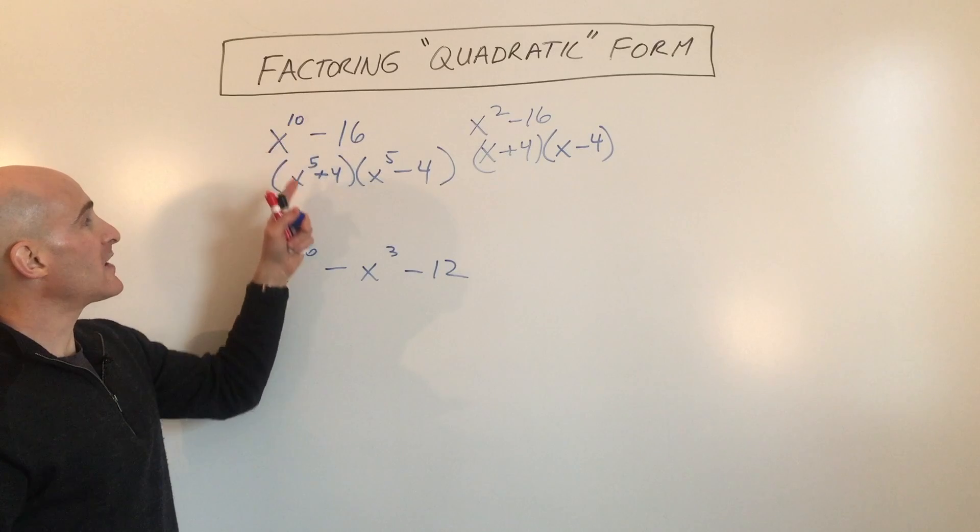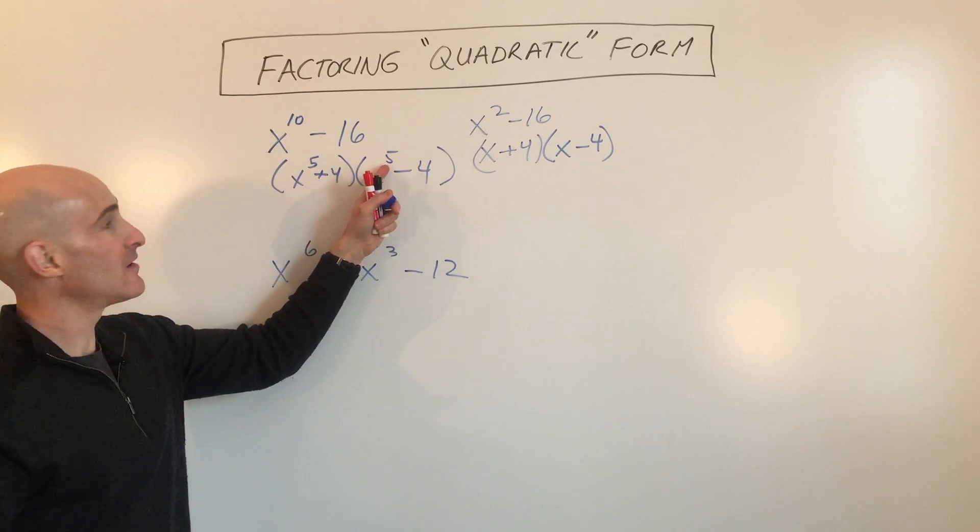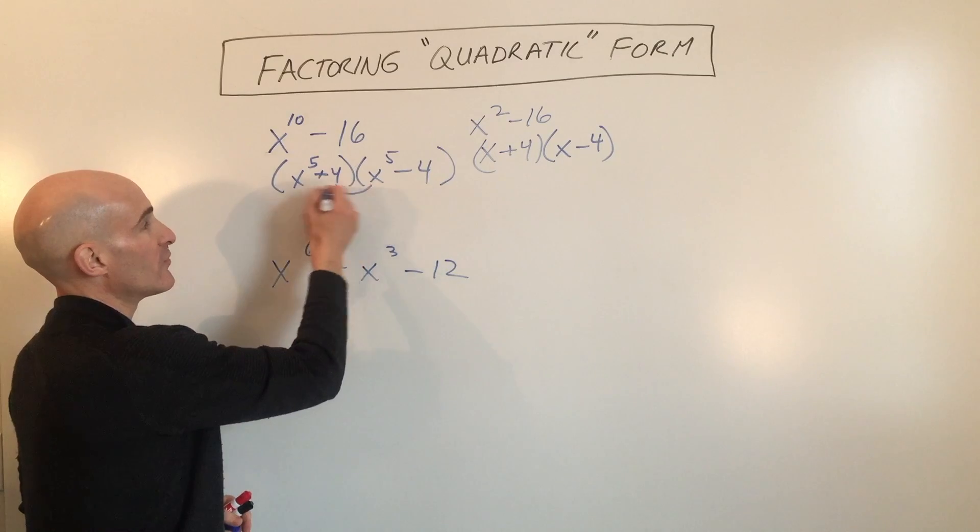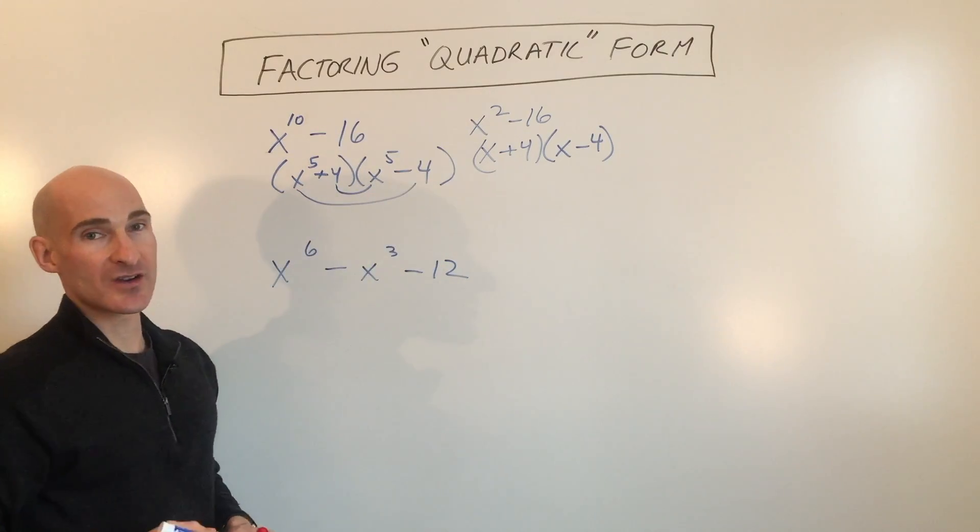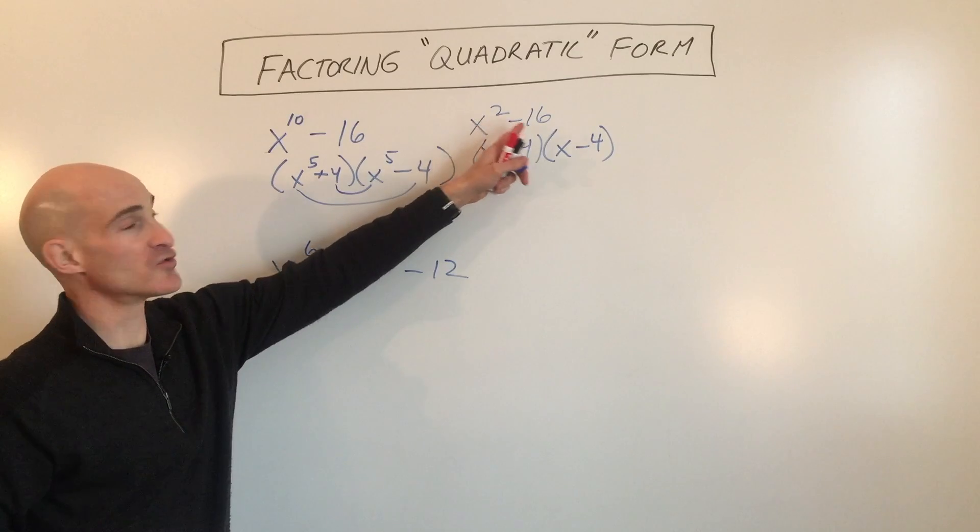If this was x to the 20th, it would be x to the 10th and x to the 10th. But you can see it's still going to be when you FOIL, the inside and outside are going to cancel. It's going to be just like factoring a difference of two squares.